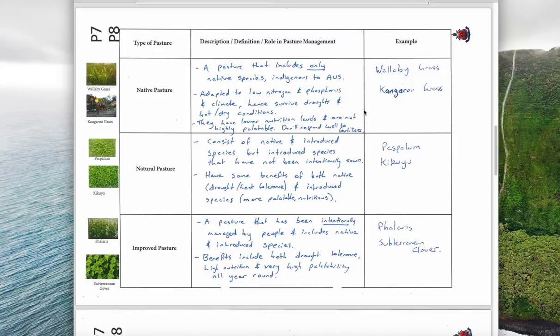Natural pastures on the other hand consist of native and introduced species but they haven't been intentionally sown by anyone. They've just turned up and are the way they are by chance. They have some benefits of both native and introduced species - the drought and heat tolerance and more palatable and nutritious of introduced species. Examples are paspalum and kikuyu.